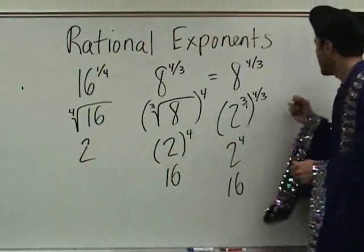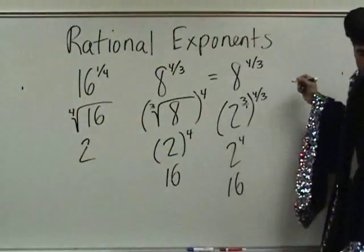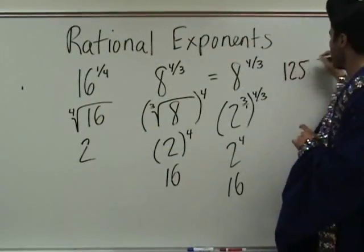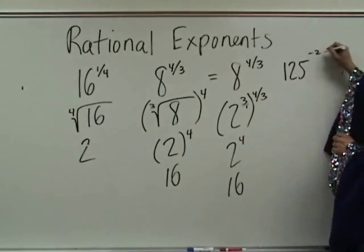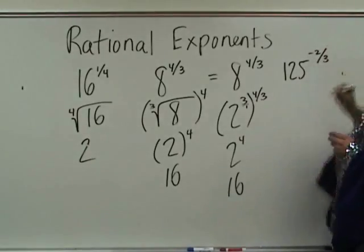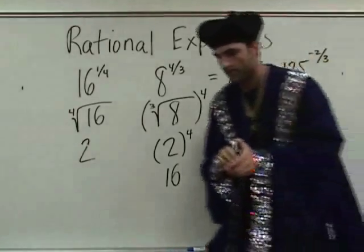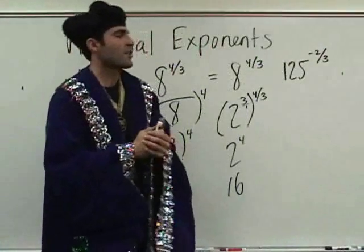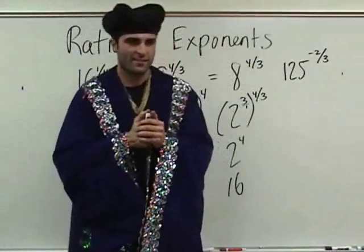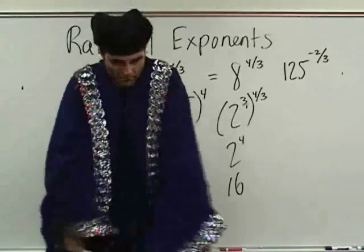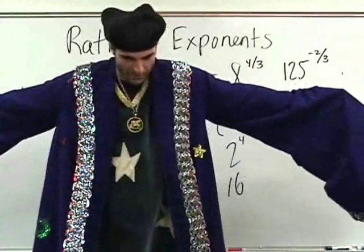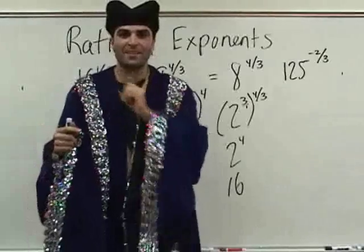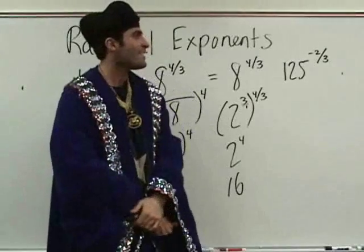Let's do one more here and then we'll stop. One twenty-five to the negative two over three. The power of your mind can solve negative exponents, my children. I am the mathematician — with bling. That song's in my head.